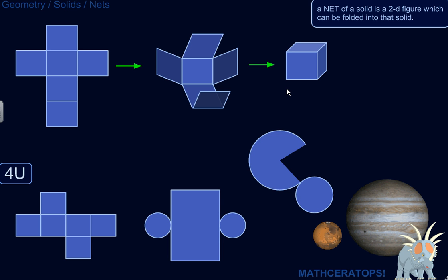This is an interesting concept in solid geometry. So what is a net of a solid? For example, what's the net of a cube? Well, a net of a solid is a two-dimensional figure which can actually be folded into that solid.